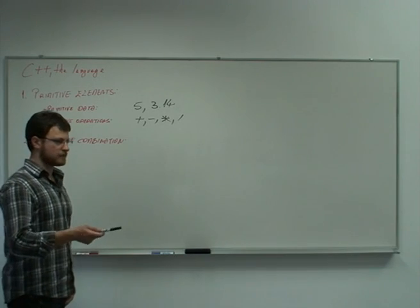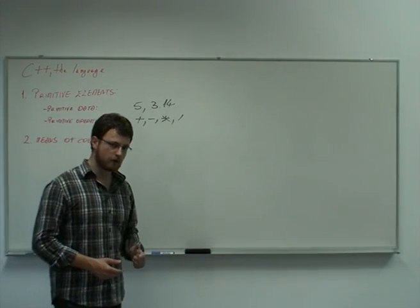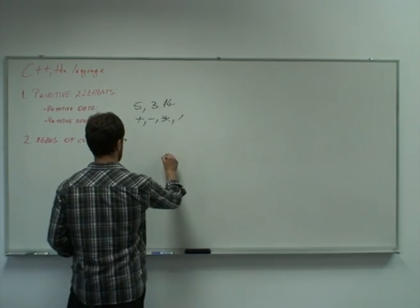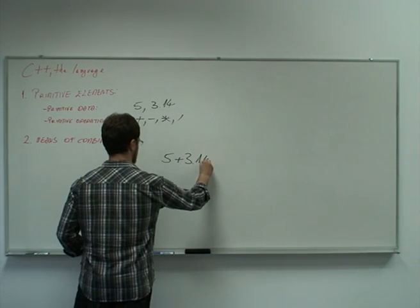One possible combination of these primitive elements is an arithmetic expression that we all learned from school. Such as this one: 5 plus 3.14.